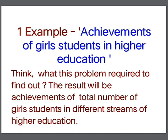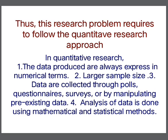Example 1: Achievements of Girls Students in Higher Education. What does this problem require to find out? The result will be the achievements, meaning the total number of girls students in different streams of Higher Education. This research problem requires following a quantitative research approach.